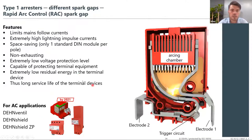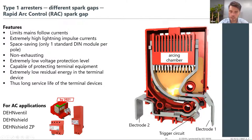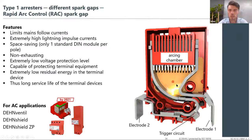New technology coming next year is an improved spark gap called the Rapid Arc Control spark gap. It works with an arcing chamber with two electrodes. The arc forms between the two electrodes, moves up through the arcing chamber extinguishing the arc without any residual energy passing through to your terminal device. It also has a low mains follow current, meaning upstream fuses are protected and will not trip.